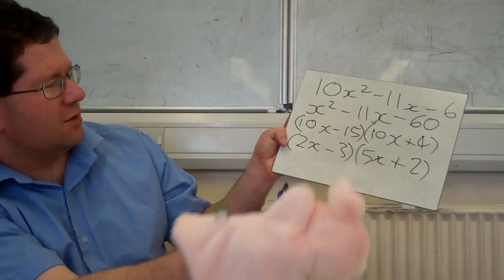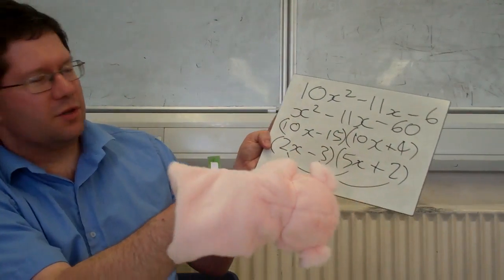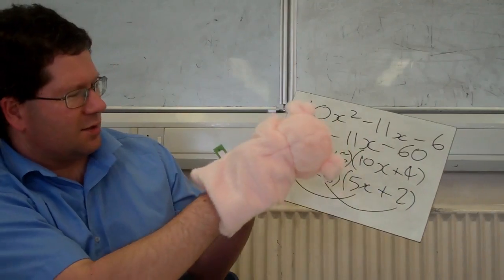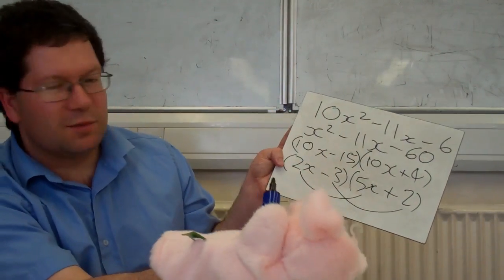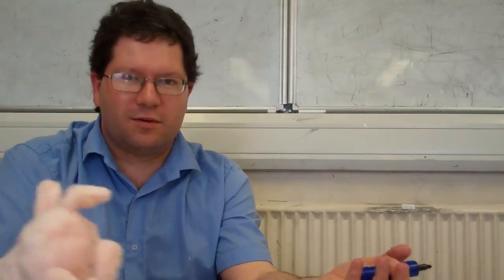And if you check it, you've got 10x squared, don't you? And then your middle two terms, you've got your minus 15x and a plus 4x, and that makes your minus 11x. That is how you do it, isn't it? That's how you factorise quadratic, with more than 1x squared, if you want to do it in a weird way.